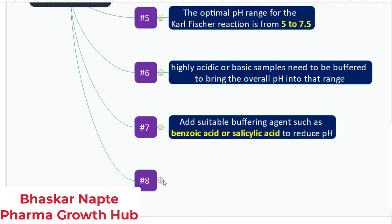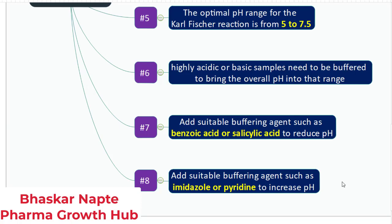If you are having highly acidic samples, then you can add imidazole or pyridine while analyzing the sample so that the pH will get increased a little and it will be in the range of 5 to 7.5.